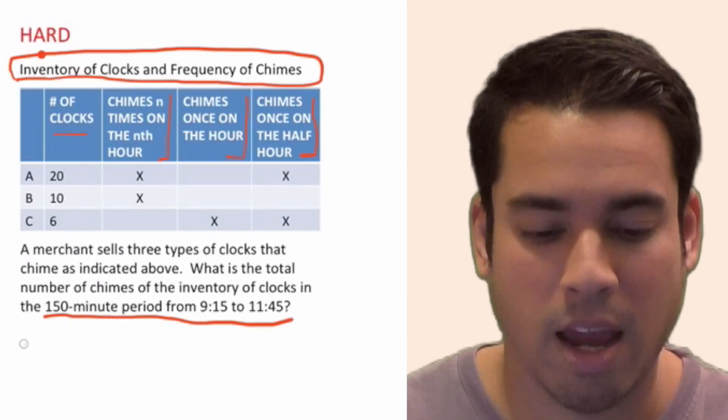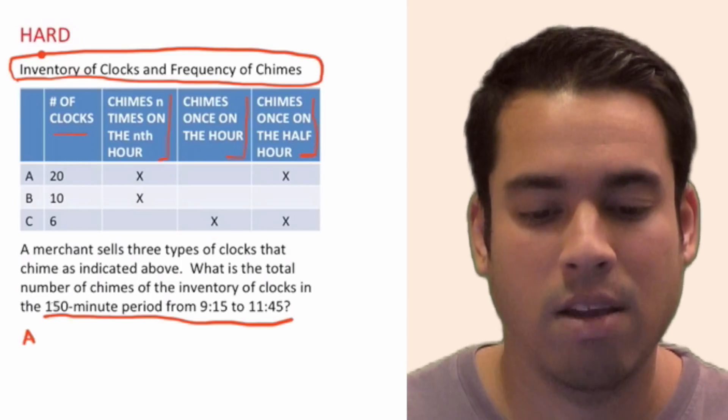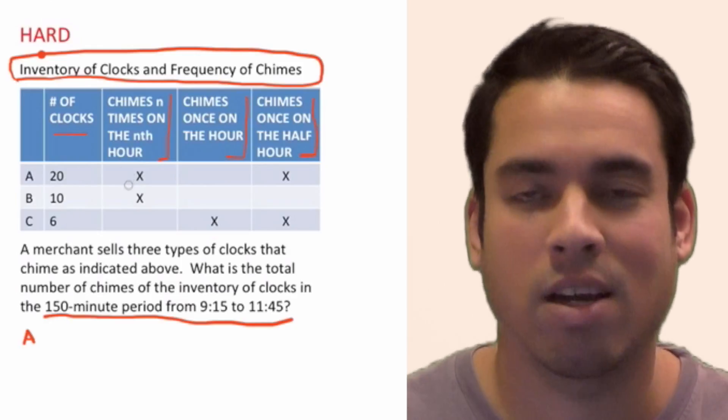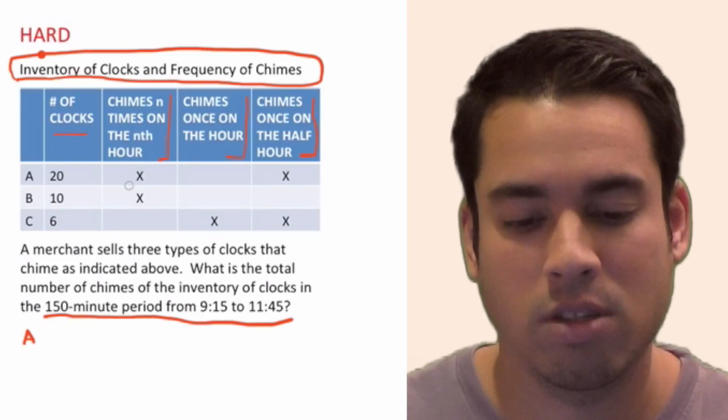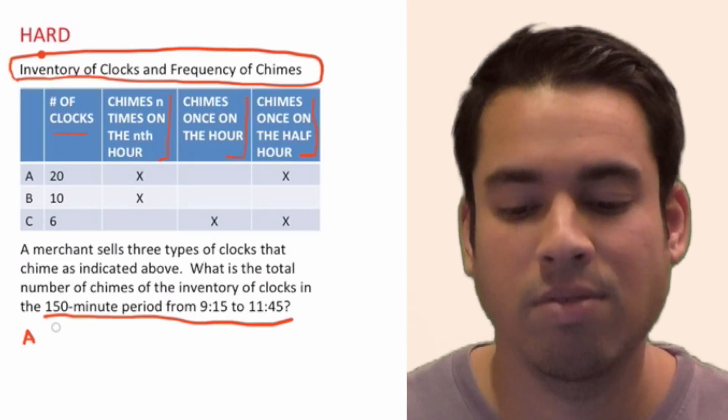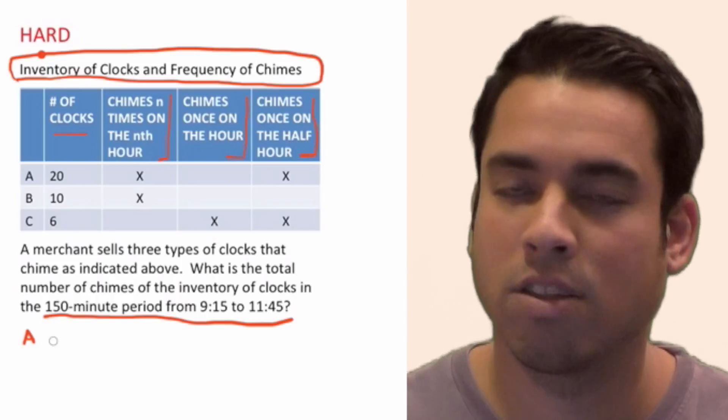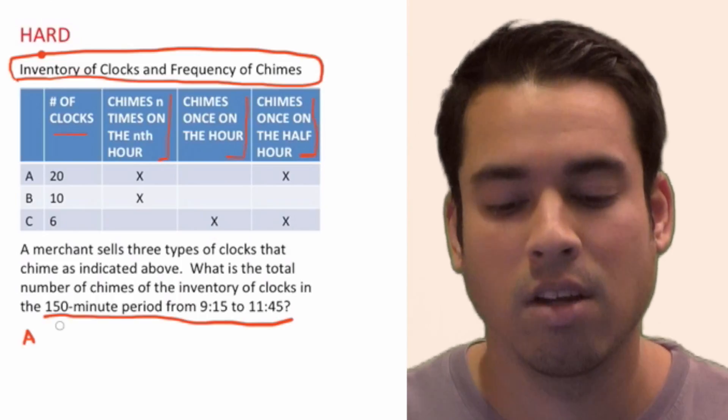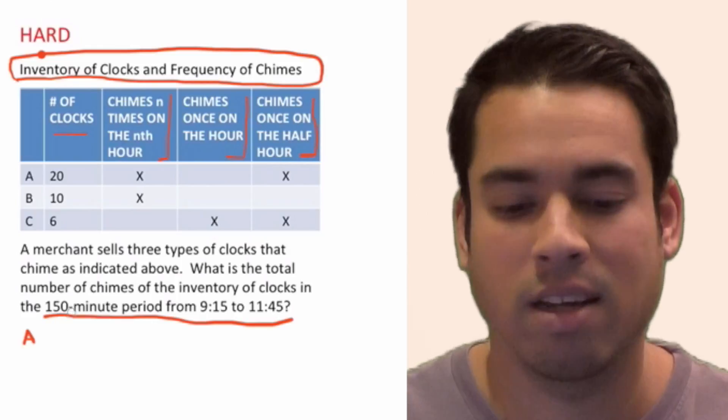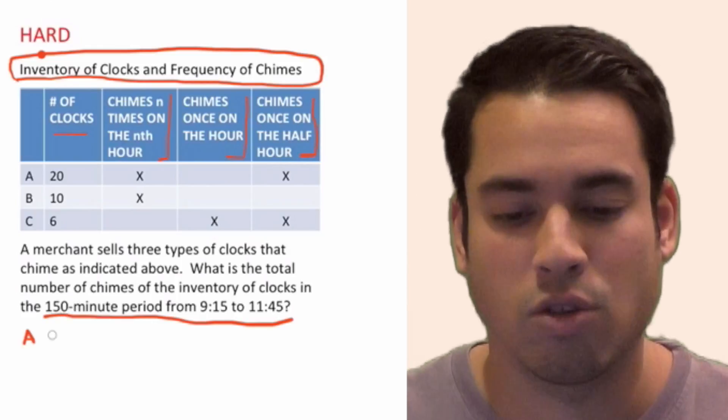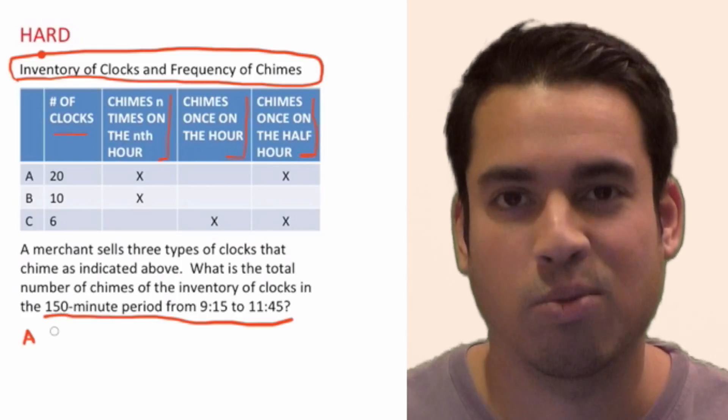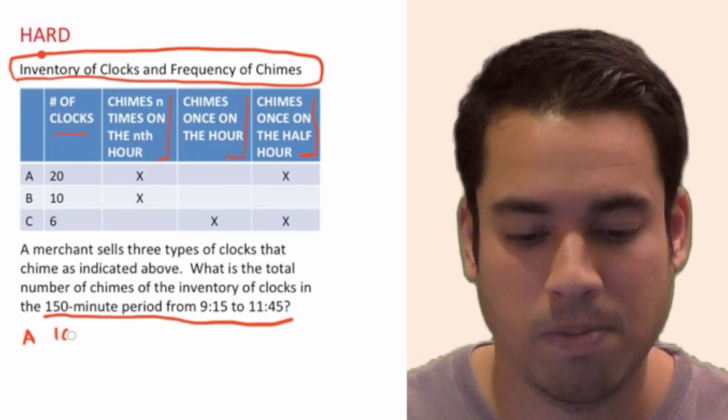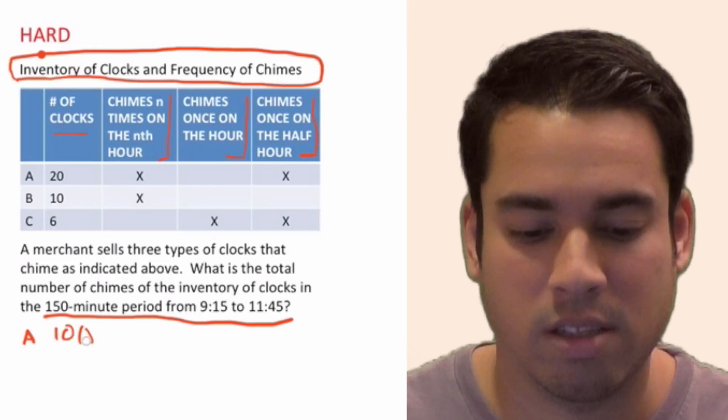So let's first think about A. With A, we have 20 clocks, and those 20 clocks chime n times on the nth hour. From 9:15 to 11:45, it's not going to chime at 9 because that's before the period. So the first hour that's going to hit in this period is 10. So it's going to chime 10 times at 10 o'clock, these 20 clocks. So 10 times, and then we're going to multiply that by 20 because that's the number of clocks.